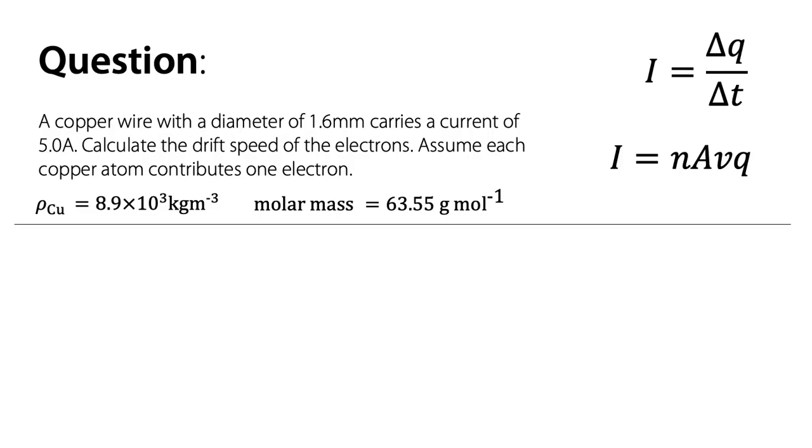Okay, so we're going to look at a question involving these equations. We'll take some copper wire, thin copper wire with a diameter of 1.6 millimeters, with a current of 5 amps. It's a pretty large current for that diameter, but we'll run with it.